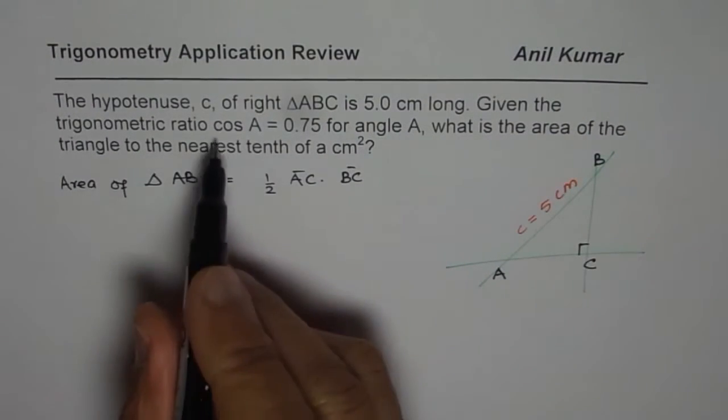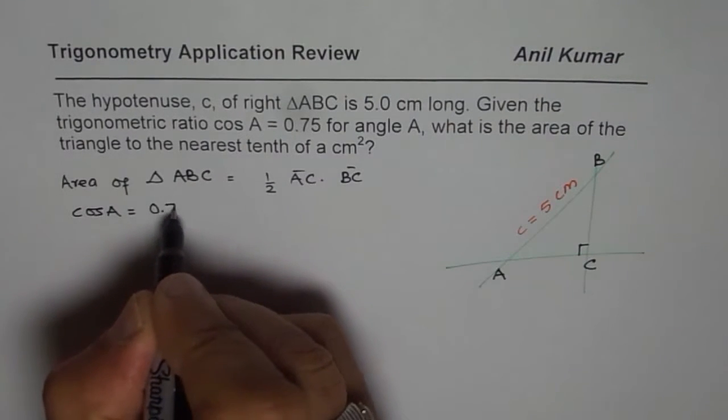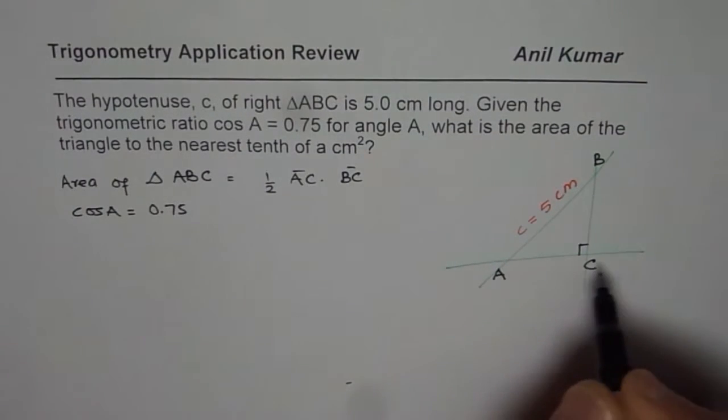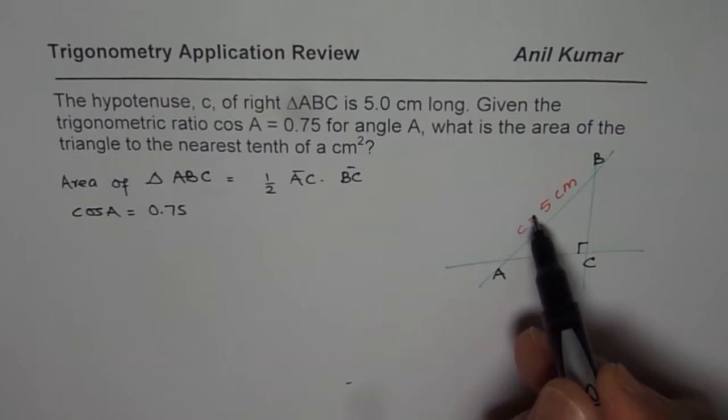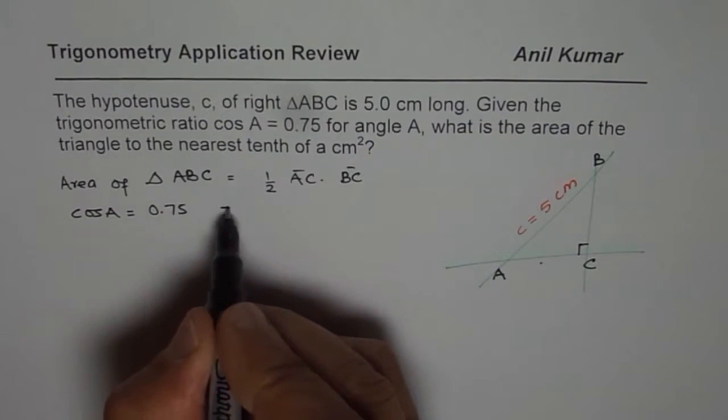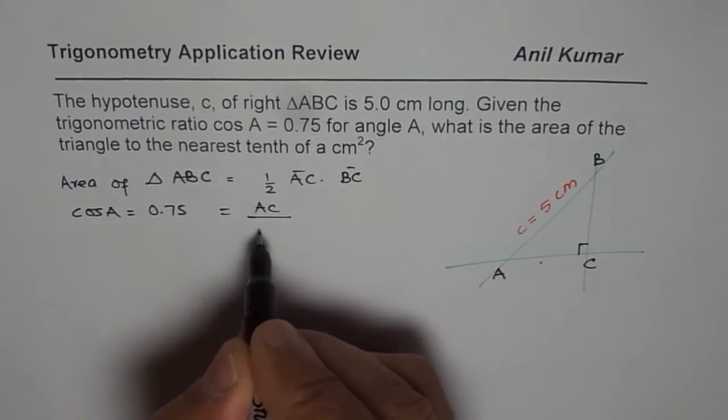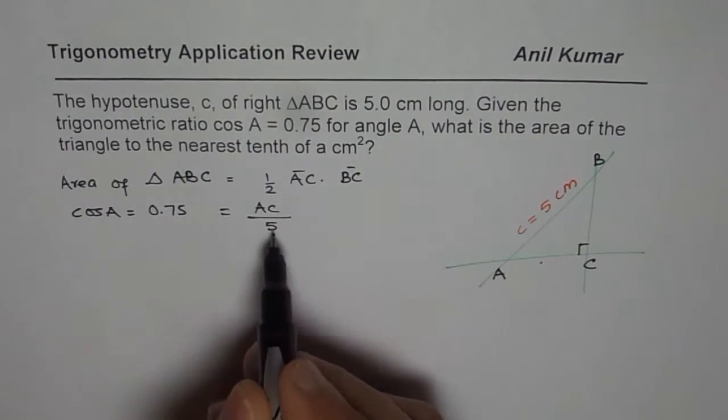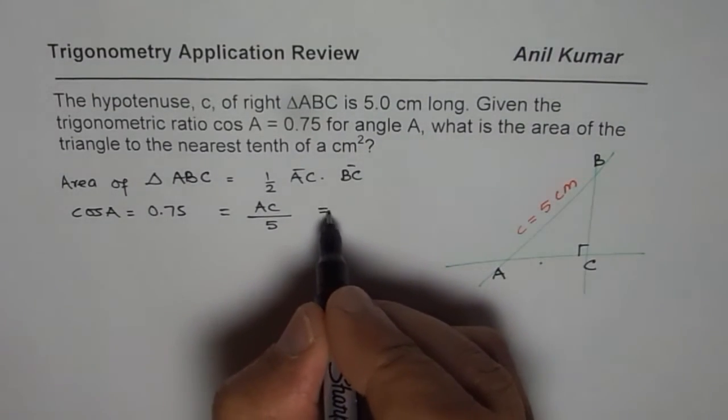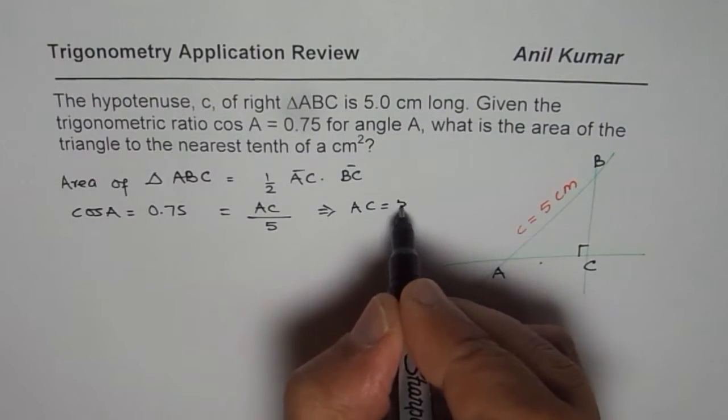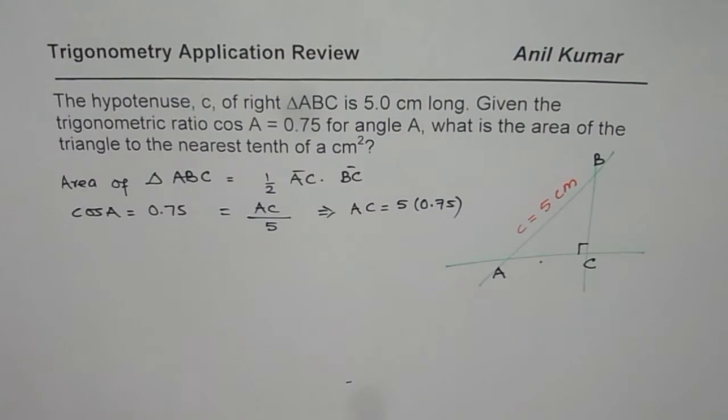You are also given cos of A. Now cos of A is given as 0.75. Cos A is the ratio of adjacent side to hypotenuse. So we can write this as equal to AC divided by 5. From here we can find what AC is. This gives us AC equals 5 times 0.75.